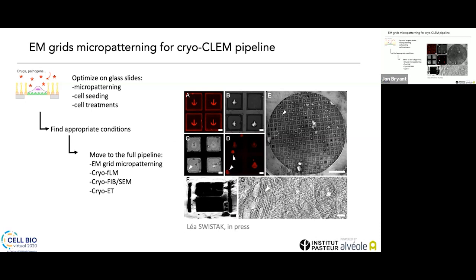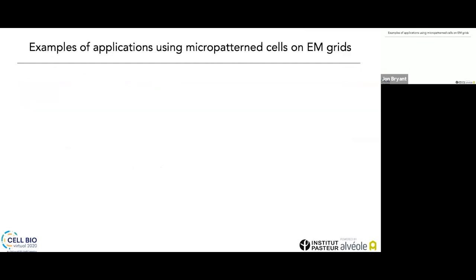Here you have an example from our upcoming paper describing all the protocols and steps needed to achieve cell micropatterning on EM grids and integrate it into a cryo-CLEM pipeline. In panel A, you can see patterns printed onto an EM grid revealed by fluorescent fibrinogen. In panels C and D, you have an example of cryo-fluorescence microscopy images showing transmitted light and WGA staining of the cells. Panel E shows an EM grid with patterned cells properly placed in the center of the EM grid squares. In panel F, you can see a lamella milled into a patterned cell, and in G, the tomogram obtained from this patterned cell.